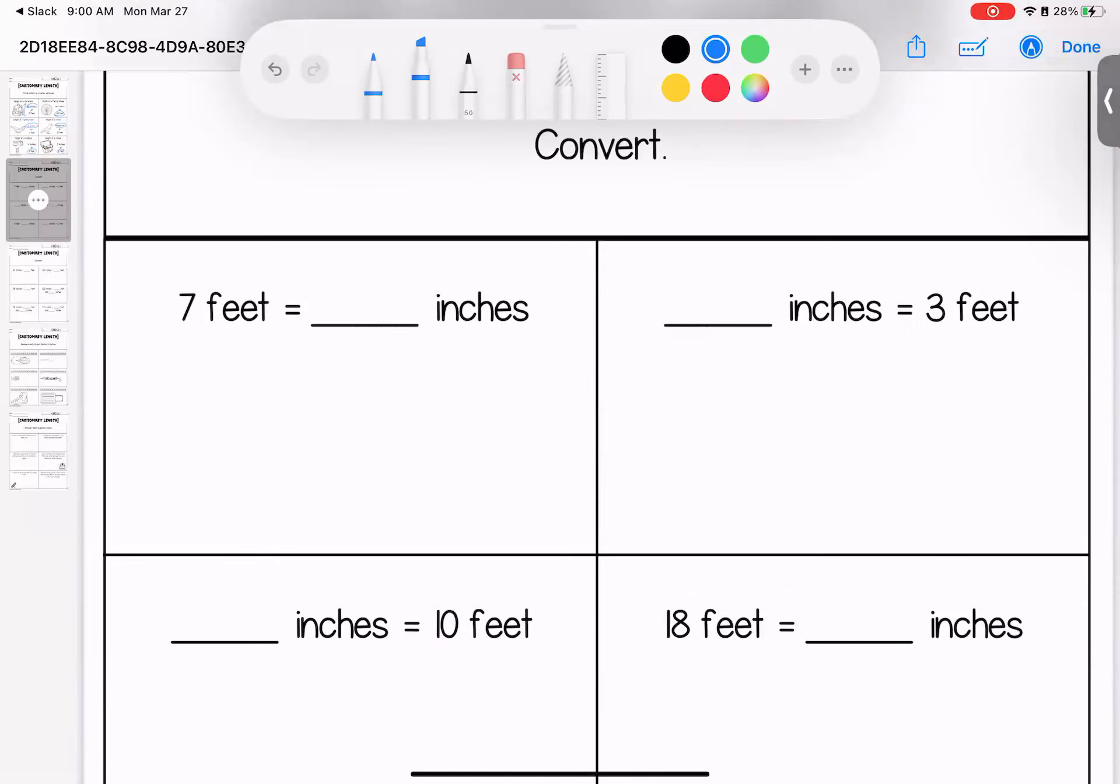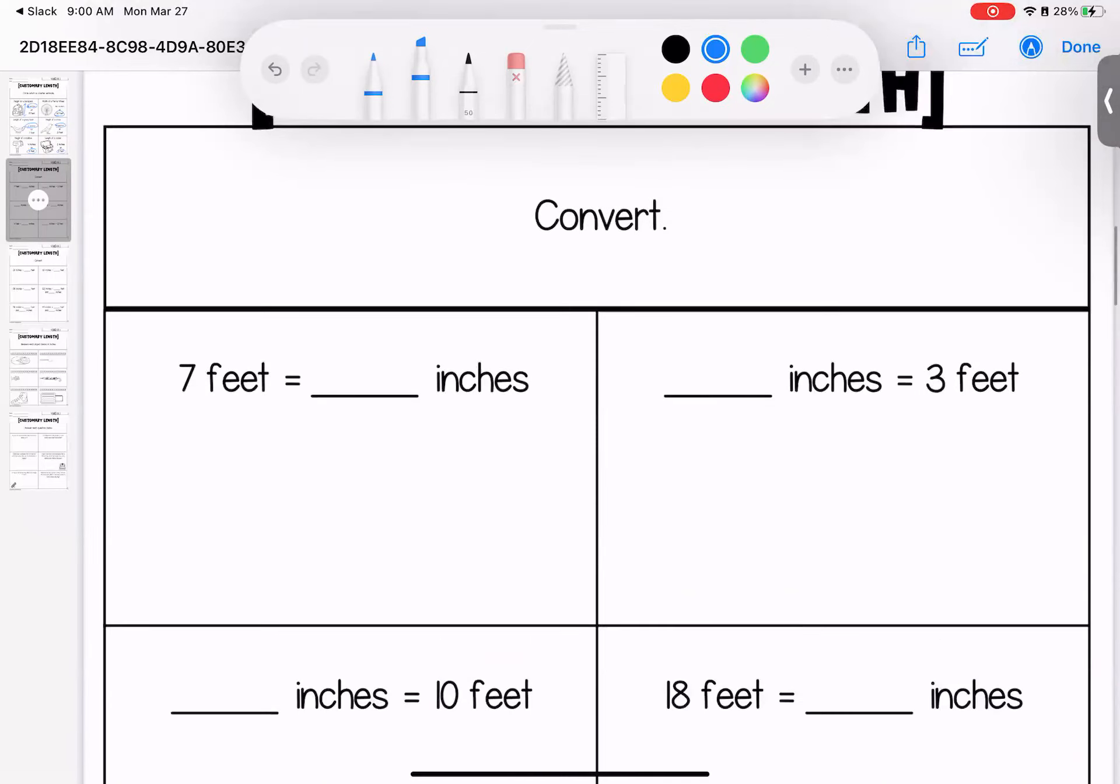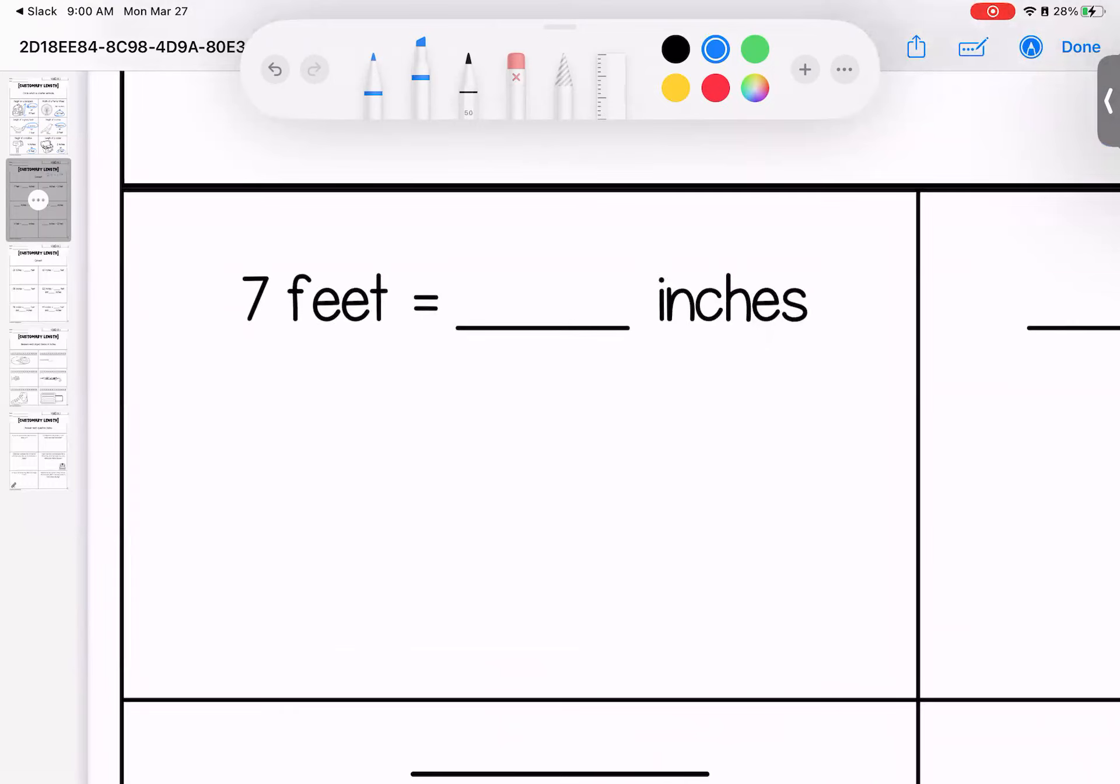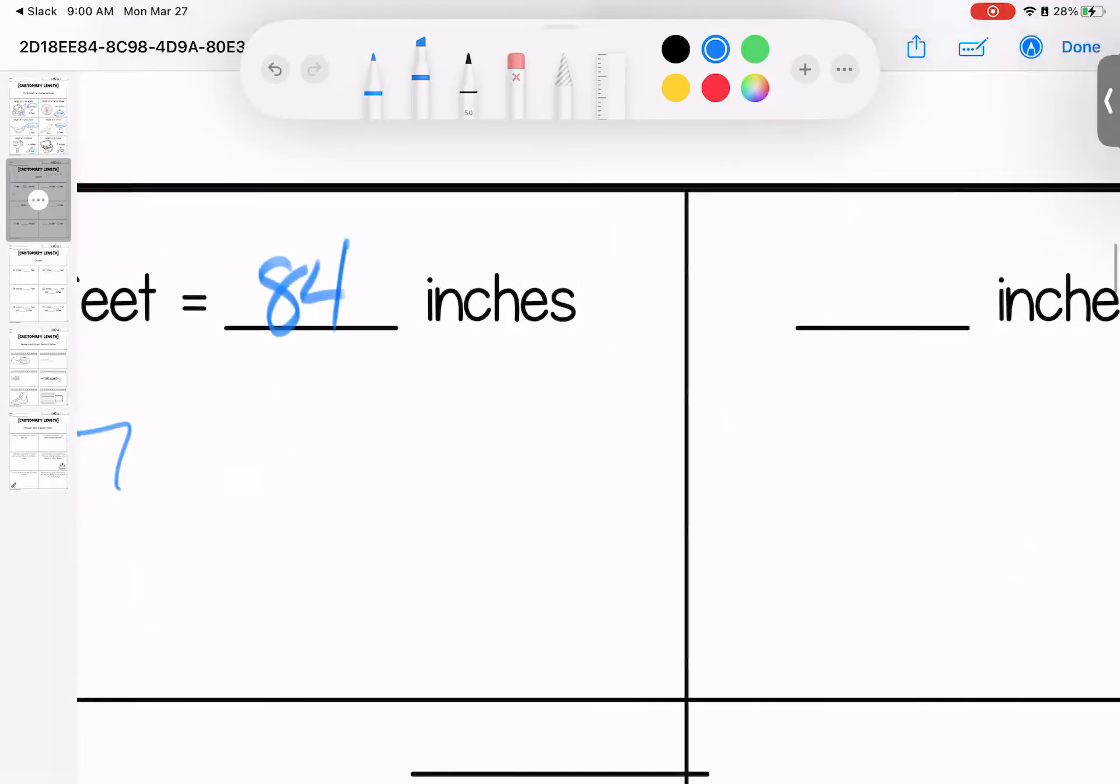All right, so we're talking about feet and inches here. As a reminder, there are 12 inches in 1 foot. So with that being said, to find out 7 feet, we would have to do 12 times 7 because every foot has 12 inches. 12 times 7 gives me 84 inches.